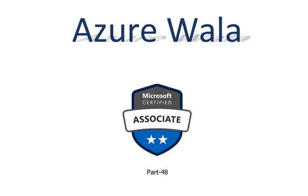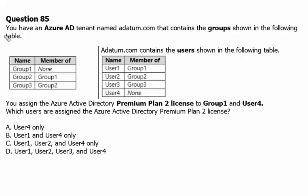Hello and welcome to Azure Walla YouTube channel. We are in part 48 of the Microsoft Certified Associates series. Today we are going to look into question number 85. You have an Azure Active Directory tenant named adatum.com that contains the groups shown in the following table.